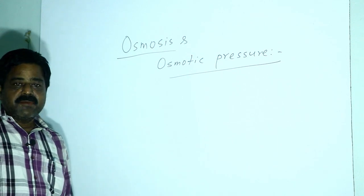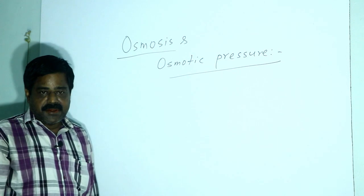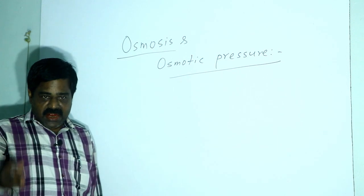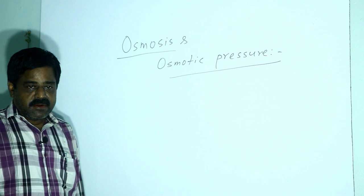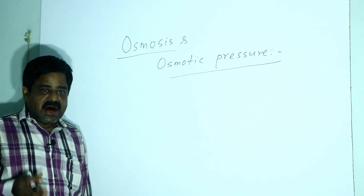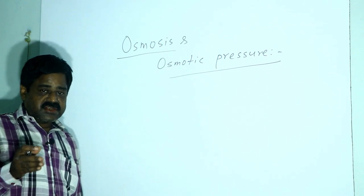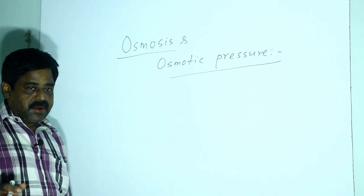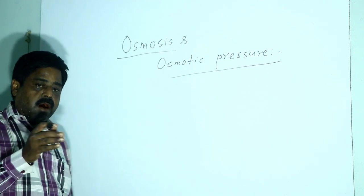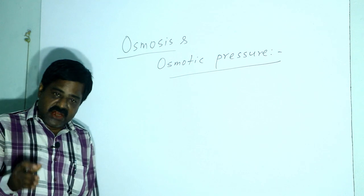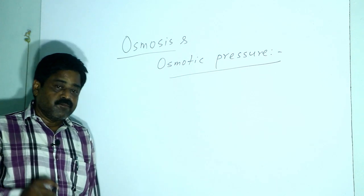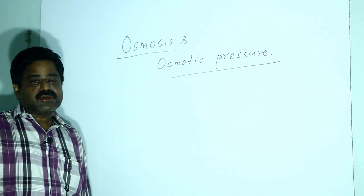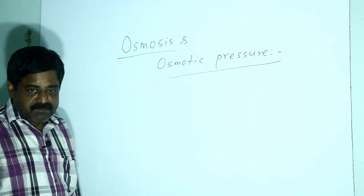What do you mean by a semi-permeable membrane? Egg membrane, fish bladder, etc. are considered semi-permeable membranes, which allow only the solvent — for example, water — to pass through, but not any solute particles.